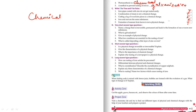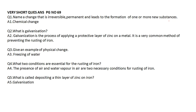Now coming towards very short question answers on page number 69. Name the change that is irreversible and permanent — chemical change. Galvanization is a process in which we coat a layer of zinc metal on an iron object to prevent it from rusting.